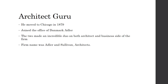Louis Sullivan moved to Chicago in 1879 and joined the office of Dankmar Adler. The two made an incredible duo on both the architect and business sides of the firm. Sullivan took care of the architecture — he was the architect guru, coming up with a lot of ideas — while Adler took care of the business side. Together they created a firm named Adler and Sullivan Architects, and that's where Sullivan really became famous.